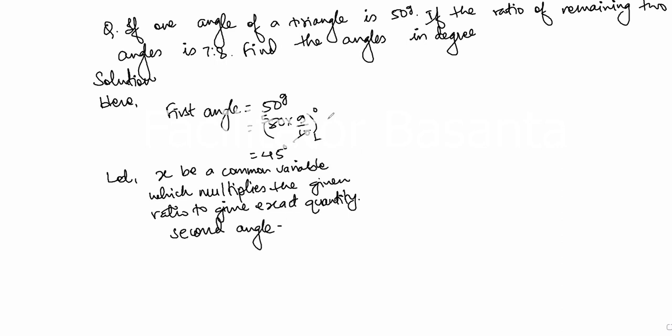It means that the second angle will be, the ratio is 7 to 8 means it will be 7x. And then lastly, the third angle triangle will be 8x.